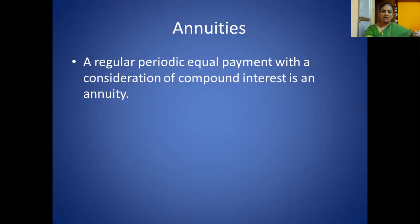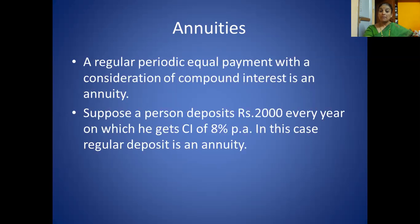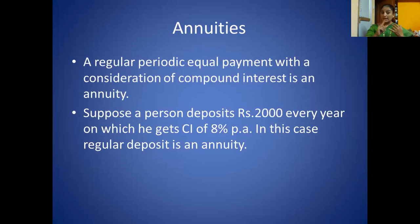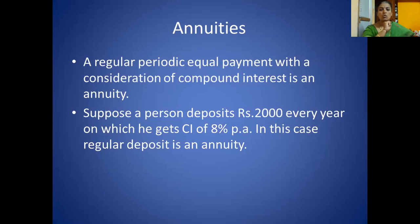Let us take one example. Suppose a person deposits rupees 2,000 every year on which he gets compound interest of 8% per annum. In this case the regular deposit is called as annuity, because he is making the deposit regularly every year and on which he is getting 8% compound interest. Therefore we call it as annuity.